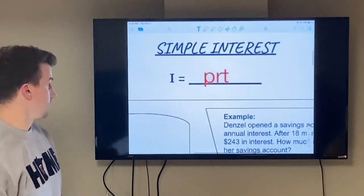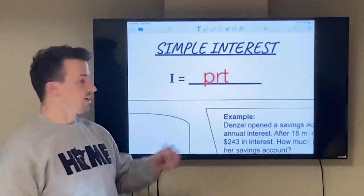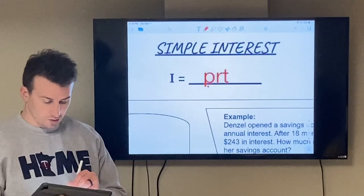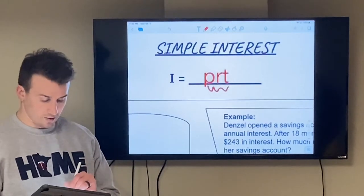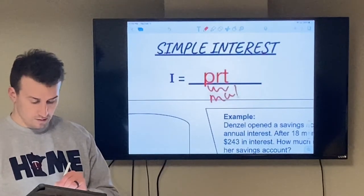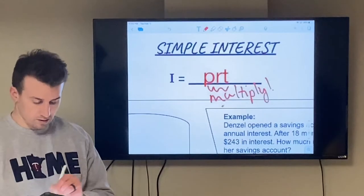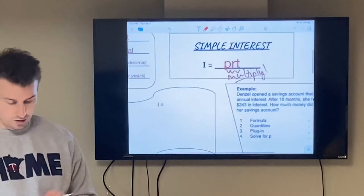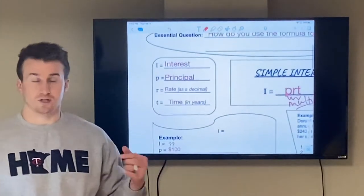So simple interest equation is I equals PRT, which means that we are multiplying these three together to find the interest amount, right?